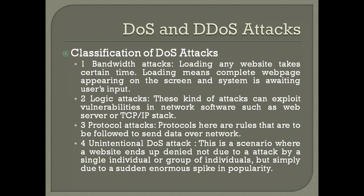The third type is protocol attacks. Protocols are rules laid down by networks — a set of rules to be followed when sending data over a network. In protocol attacks, attackers change or manipulate these rules and create problems within them, causing attacks. The fourth type is unintentional DoS attack.